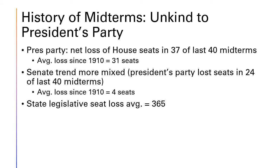Looking at the history of midterms going all the way back to the Civil War, the president's party has lost seats in the House of Representatives 37 out of 40 times. That is a remarkable trend, approaching something close to a law of American politics. Usually we're talking about substantial losses, averaging a loss of 31 seats for the president's party since the House was first apportioned at its current size of 435 seats following the 1910 census.